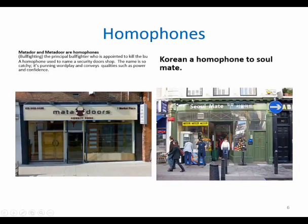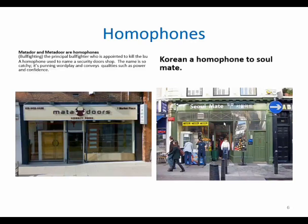Let's move on to another example. Here in Korea, we have a shop and the name 'Soulmate' — 'Seoul' here is the name of the Korean capital, and it rhymes with or is identical in pronunciation to the word 'soulmate.' Whether it's Matadors or Soulmate, they draw on our ability to understand the relationship between each couple of homophones. The language conveys that the doors are powerful, and also conveys that Soulmate — this shop — is giving us relaxation, calm, and some sort of harmony. All these meanings are transferred to us by using these homophones.